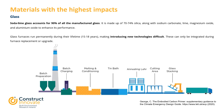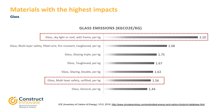Soda-lime glass accounts for 90% of all manufactured glass. It is made up of 70–74% silica, along with sodium carbonate, lime, magnesium oxide and aluminium oxide to enhance its performance. Glass furnaces run permanently during their lifetime of about 15–18 years, making introducing new technologies difficult — these can only be integrated during furnace replacement or upgrade. The embodied carbon of glass can vary depending on the specification. Using data from the ICE database, glass can vary from 3.10 kg of CO2 per kg of glass all the way down to 1.44 kg of CO2 per kg. The more processing involved in making glass, the higher the embodied carbon.